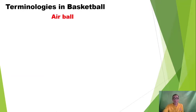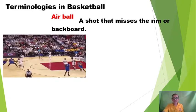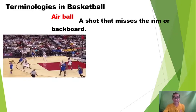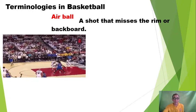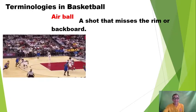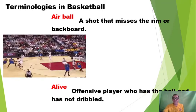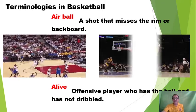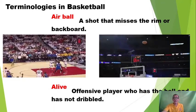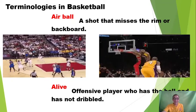Number one is the airball. Airball is a shot that misses the rim or backboard. The next one is alive. Alive is an offensive player who has the ball and has not dribbled.